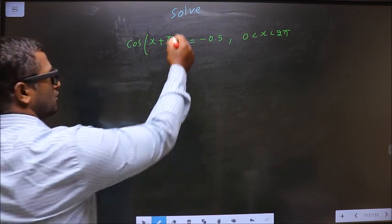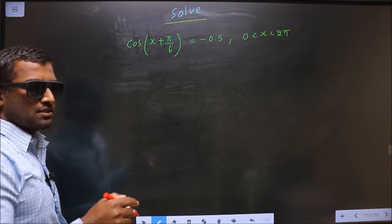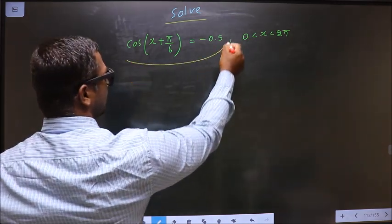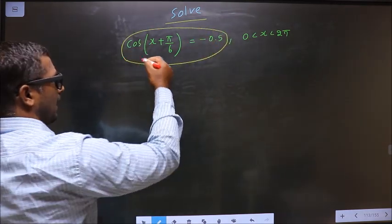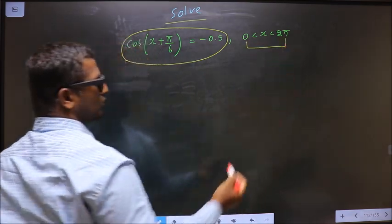Here they told you to solve, so you should find the values for x satisfying this equation and it should lie in the interval 0 to 2π.